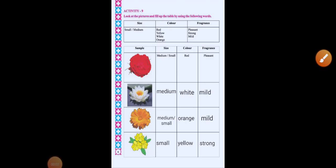Now, let us do activity 9. Toh chalo bachyo, activity 9 karte hai. Look at the pictures and fill up the table by using the following words. It means here we have given table and also given table of flowers. So, words which given in the first table are used in the table of flowers.